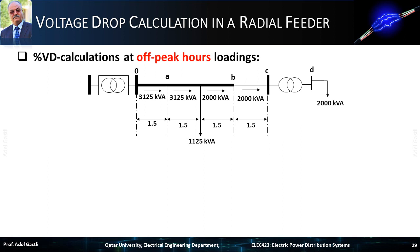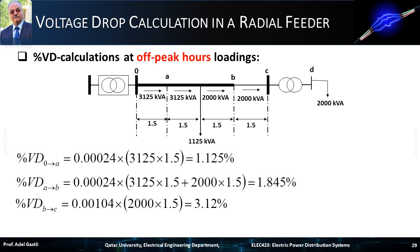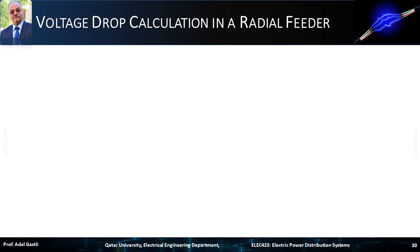We can proceed in a very similar way and calculate the percent voltage drops at the different locations under the off-peak load condition. The only difference between the previous calculations and the new ones is the value of the power under section OA and mid-section AB. The off-peak power in this case is 3125 kVA. Thus, the calculated percent voltage drops at points A, B, and C are 1.125%, 1.845%, and 3.12%, respectively. The percent voltage drop at point D is the same as that of the peak load, because the industrial load remains the same. The line-to-neutral bus voltages at off-peak hours loadings are determined in a similar way as we have seen previously for the peak load condition.